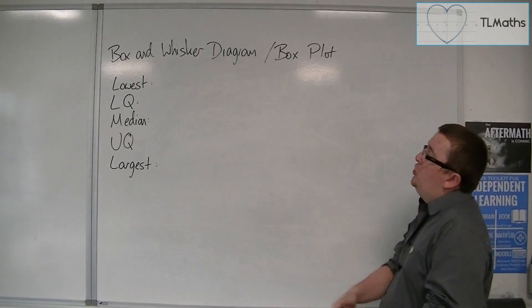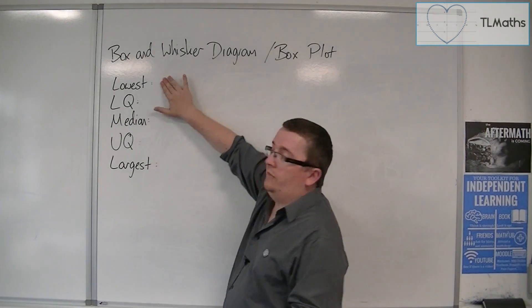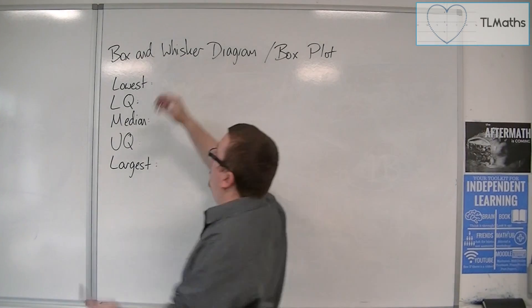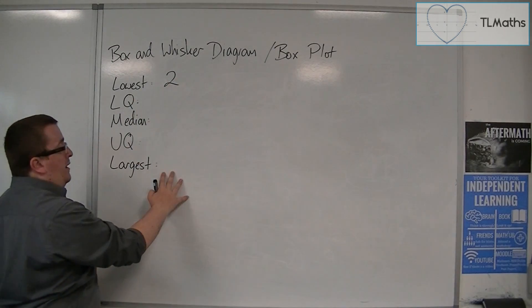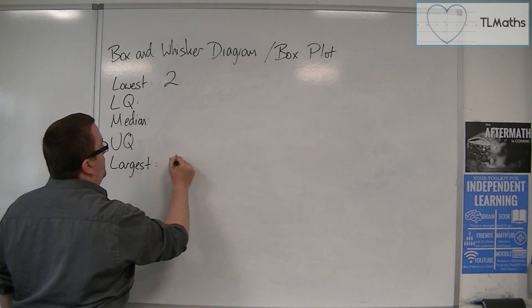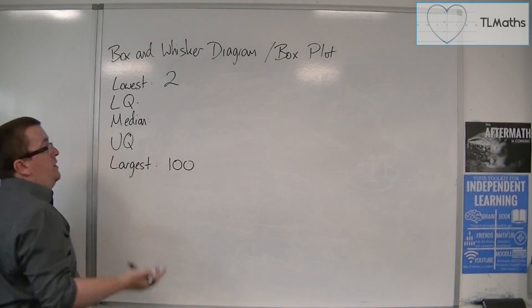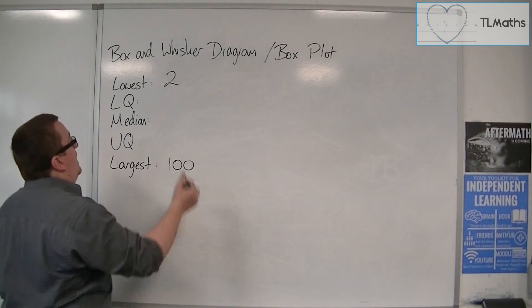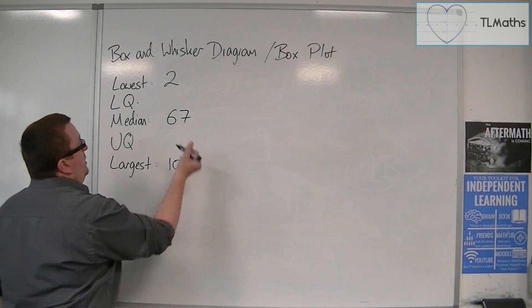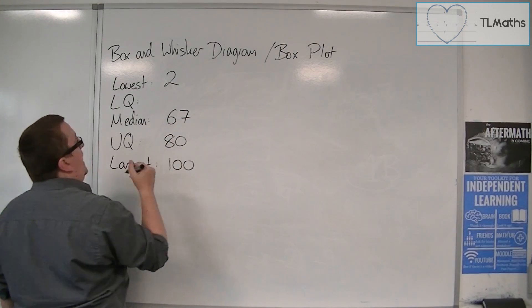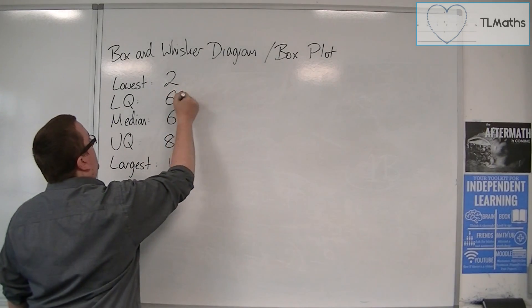If you have the information of the lowest bit of data that is there, let's say that it's 2, and you also have the largest bit of data, let's say that's 100. The median you've already calculated, let's say that's 67. The upper quartile you've also calculated as being 80, and the lower quartile is 60.